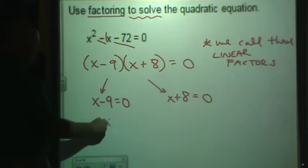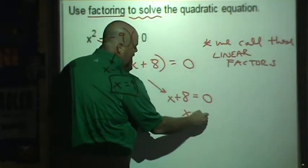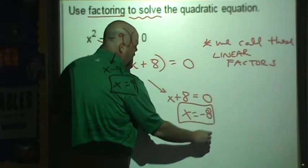So we set them each separately equal to zero. We say, well, in this case, x could equal nine. Or in this case, x could equal negative eight.